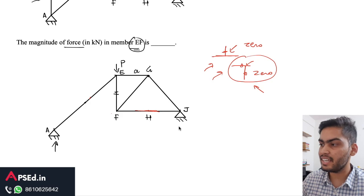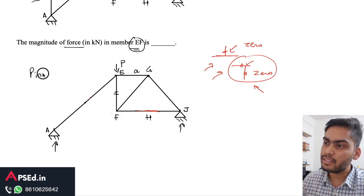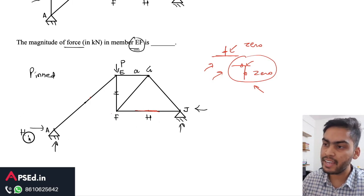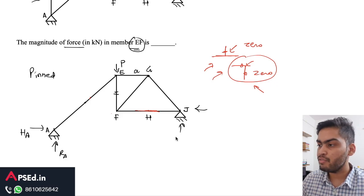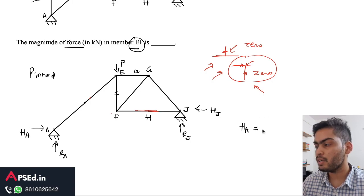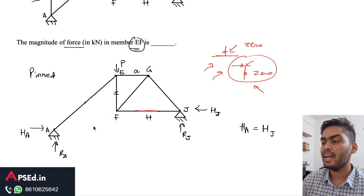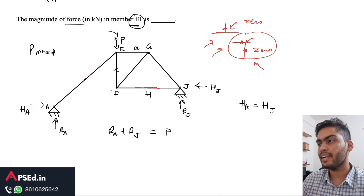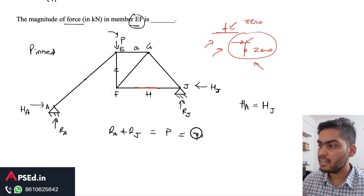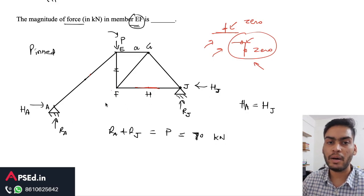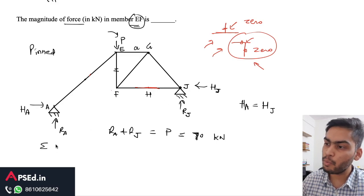Now we find the reactions at joints A and J. Since both are pinned joints, we have horizontal and vertical reactions: H_A, R_A at A and R_J, H_J at J. Since there is no horizontal or inclined load, H_A equals H_J. Also, R_A plus R_J equals the total vertical load P, which is 70 kilonewtons.